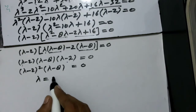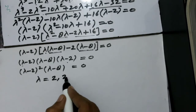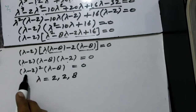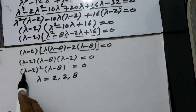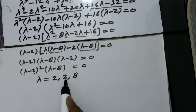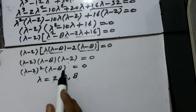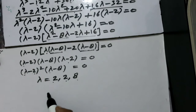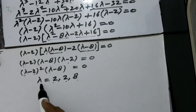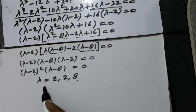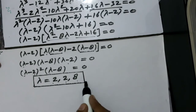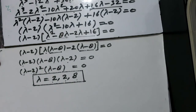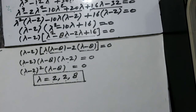The full factorization is (lambda minus 2) squared times (lambda minus 8) equals zero. Therefore lambda equals 2, 2, and 8 — the value 2 is repeated twice due to the squared bracket. These are the required eigenvalues — the characteristic roots of the given square matrix.